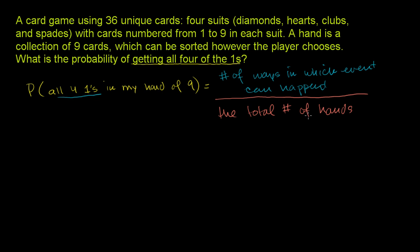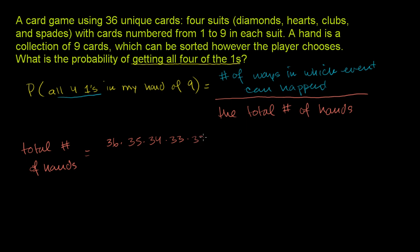Now let's figure out the total number of hands first. The total number of hands — we're picking nine cards from a set of 36 unique cards. The first card you pick is going to be one of 36 cards, then the next one's going to be one of 35, then 34, 33, 32, 31 — we're going to do this nine times. So that would be the total number of hands if order mattered.